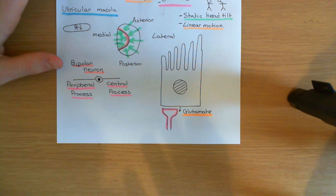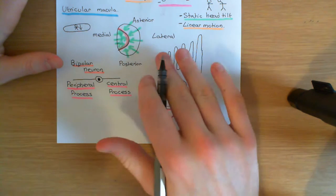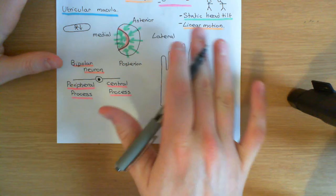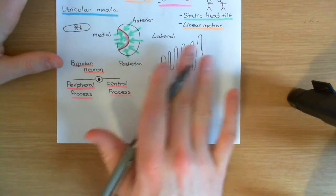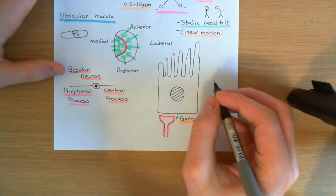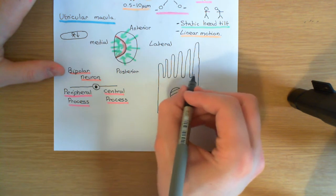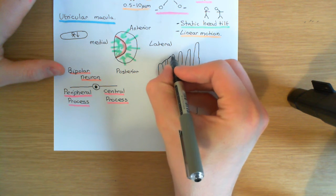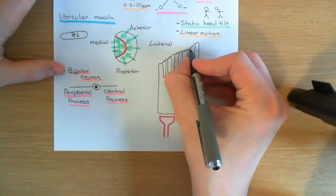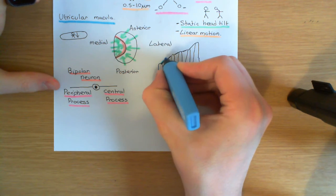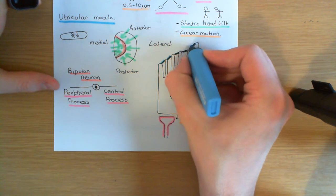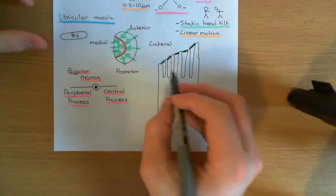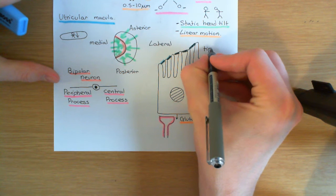The rate at which the neuron fires action potentials is determined by how much glutamate the hair cells are releasing. The amount of glutamate released depends on the electrical potential difference across the hair cell membrane, which in turn is determined by how bent the cilia — the stereocilia and the kinocilium — are on the apical surface. These cilia are connected by protein fibers between their tips, called tip links.